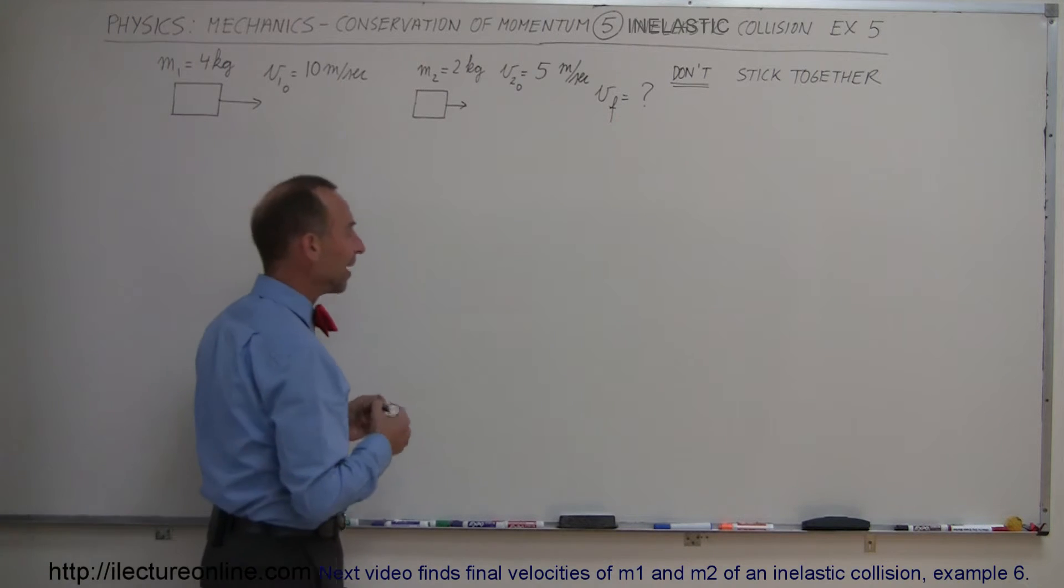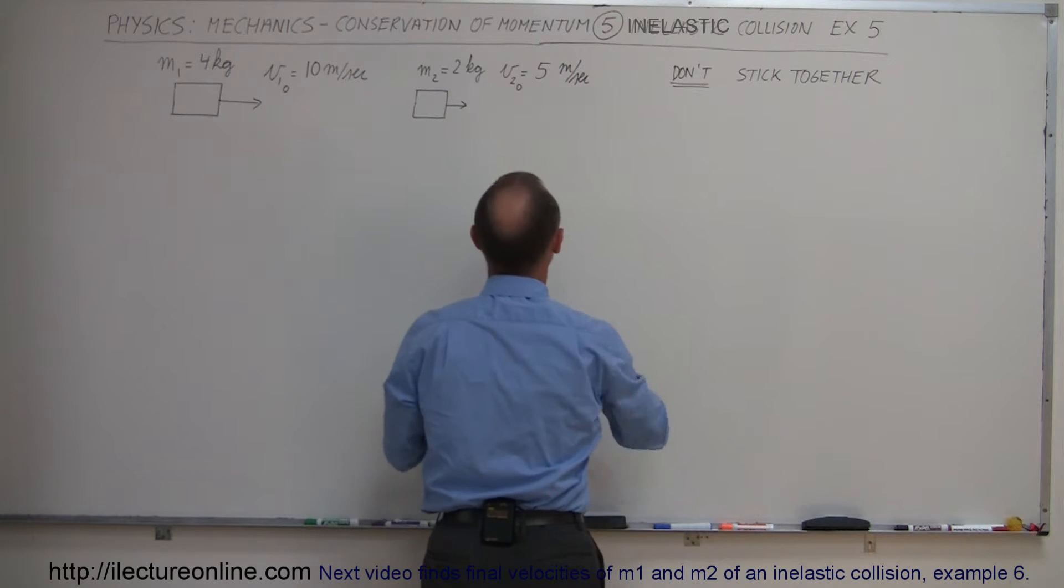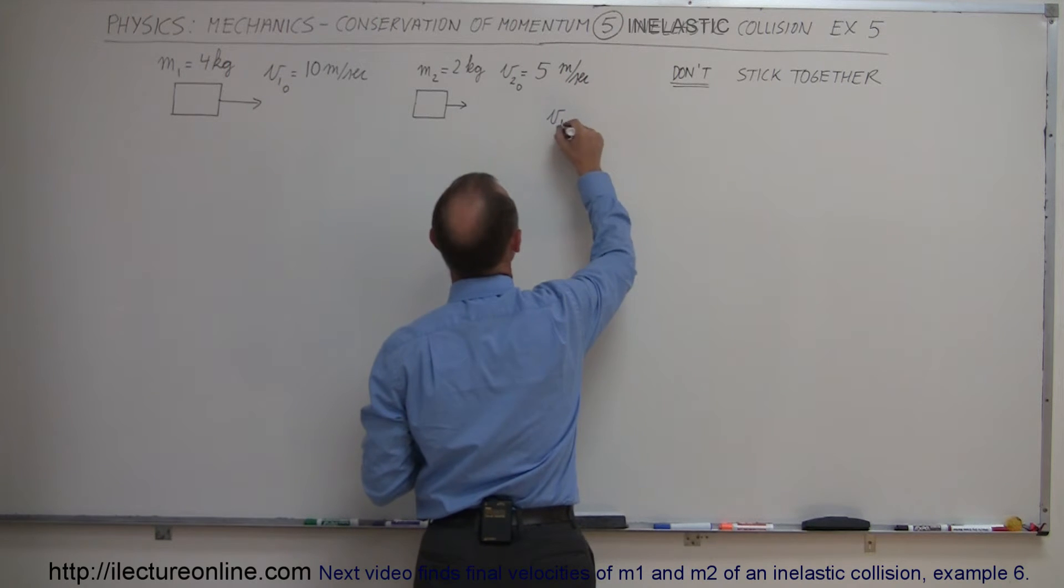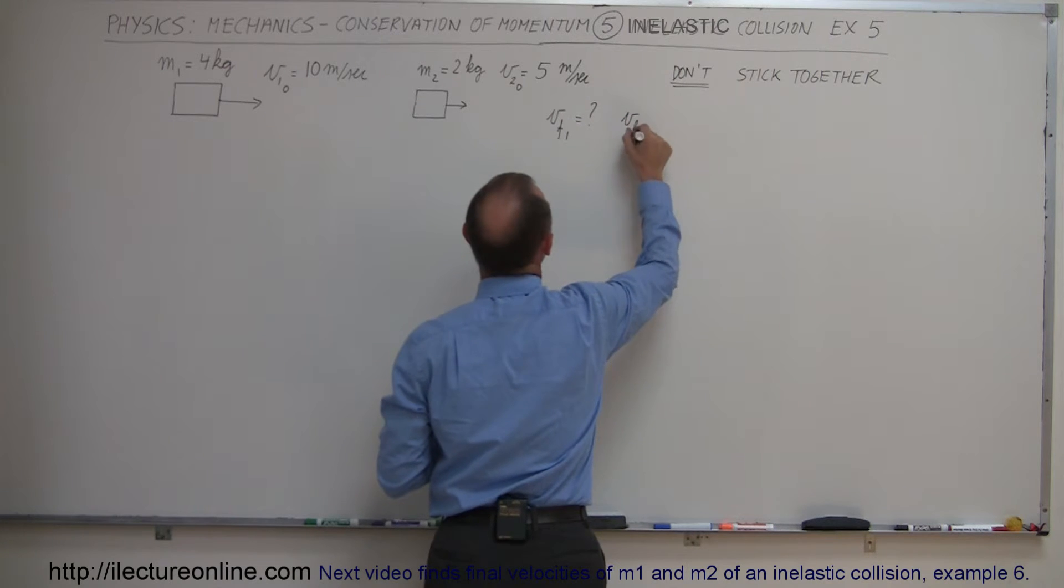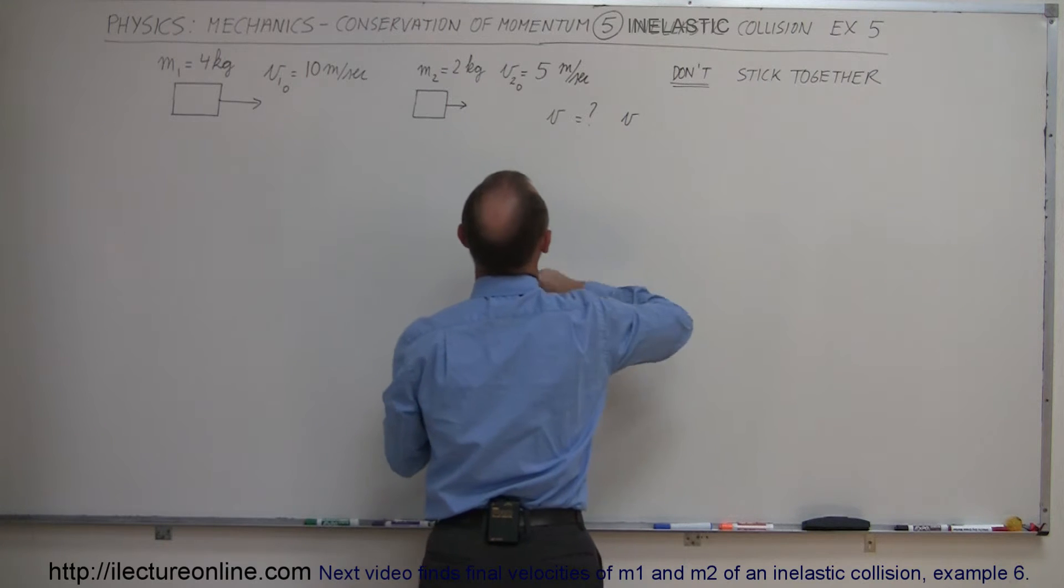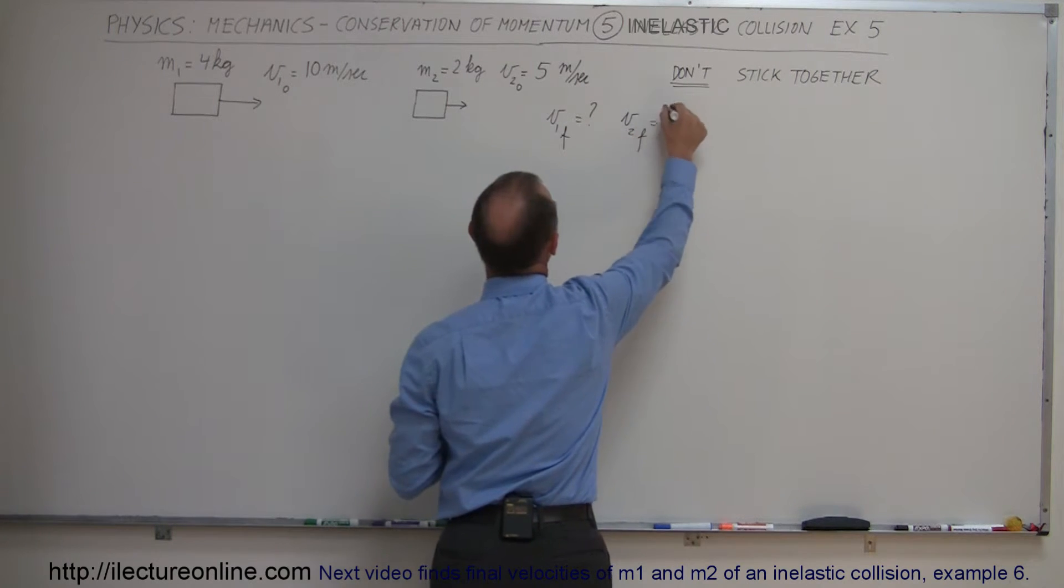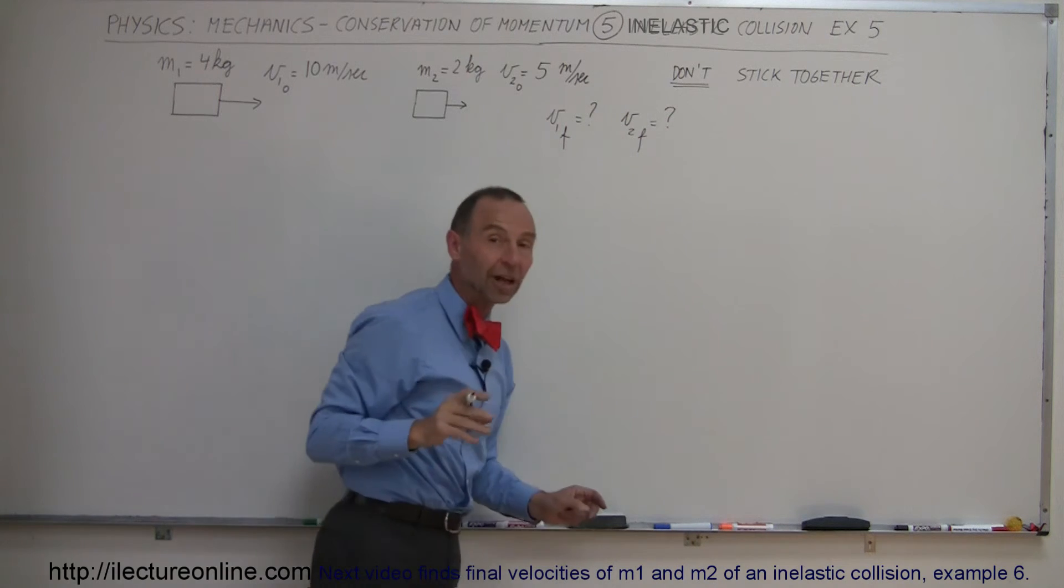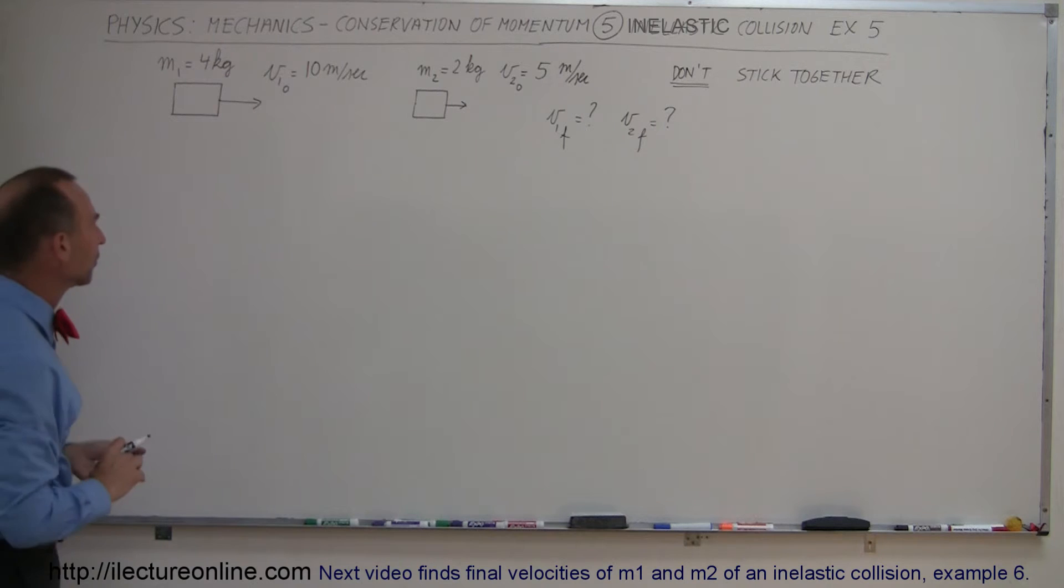So we want to find the V final, but in this case they both will have their own V final. We want to find V final of the first and V final of the second. Actually, we probably want to write it V1 final and V2 final equals question mark. So we want to know their final velocities of both of them. Let's go ahead and try to solve the problem.